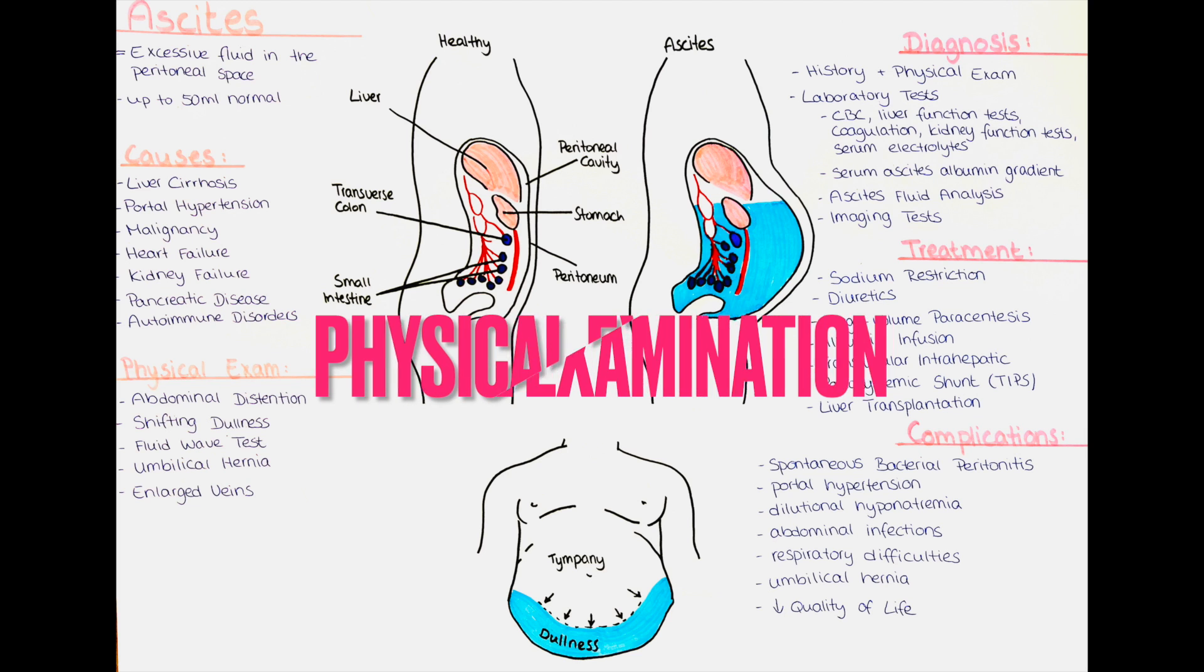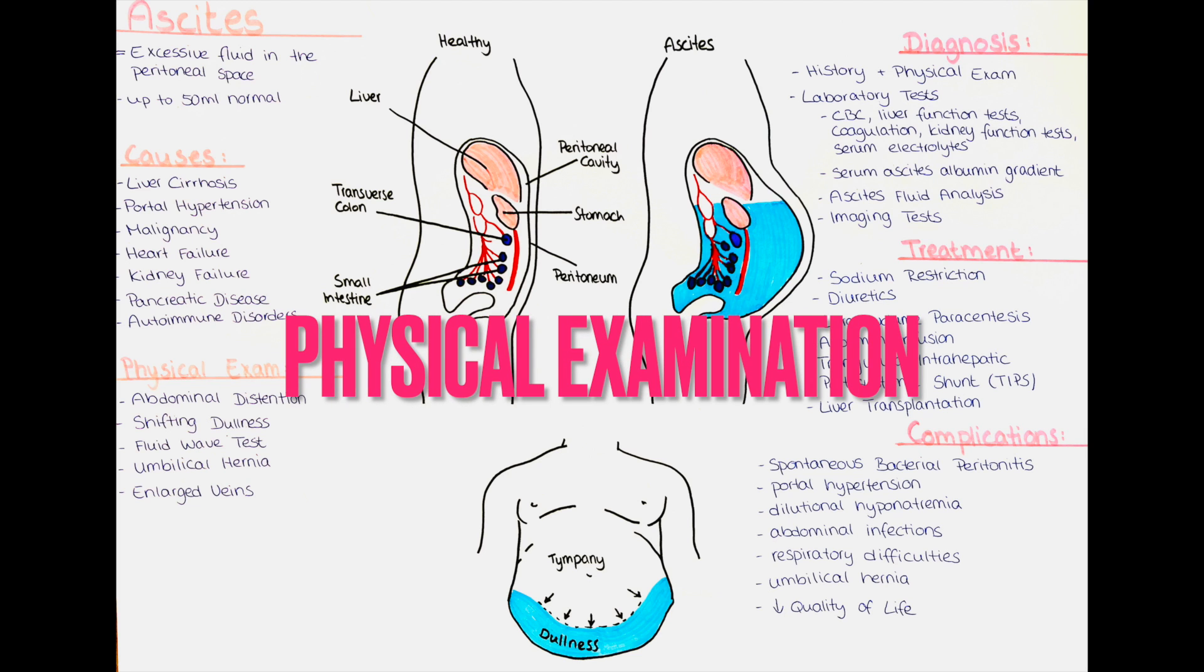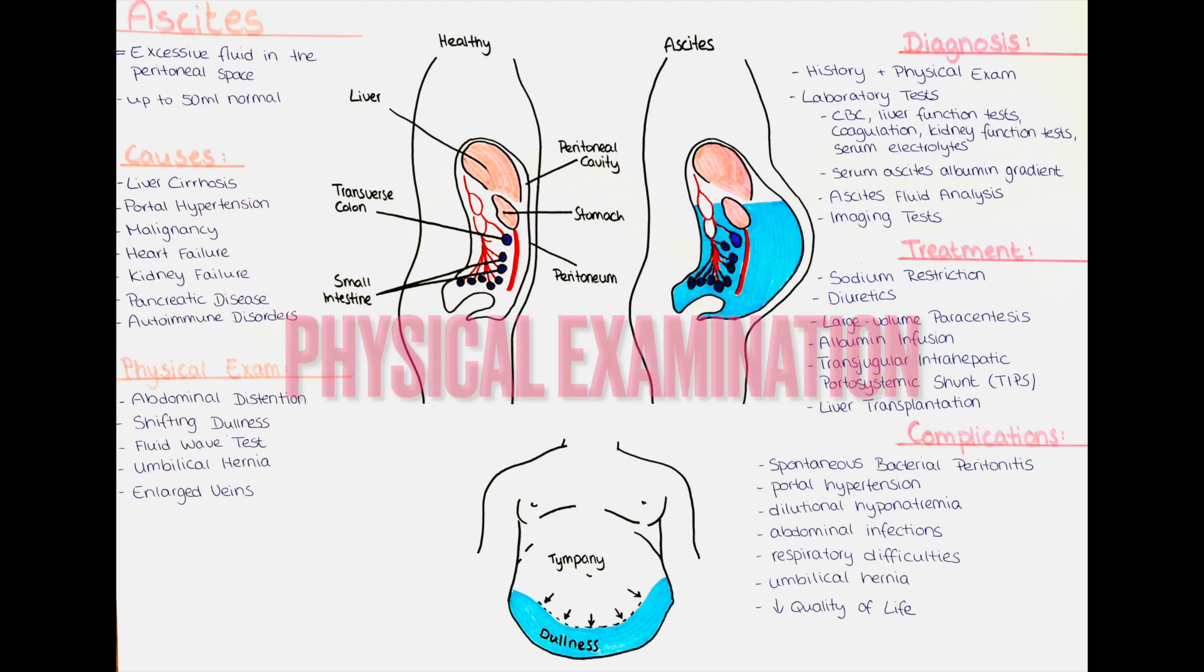How can we find out that a patient has ascites when doing a physical examination? During a physical examination, several signs can suggest the presence of ascites. We should be suspicious of ascites when we observe any of the following. The abdomen appears enlarged and tense, often with a rounded or protuberant shape. Ascites causes an accumulation of fluid in the abdominal cavity, leading to progressive abdominal distension.